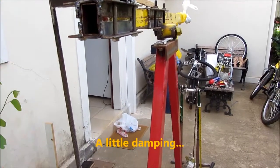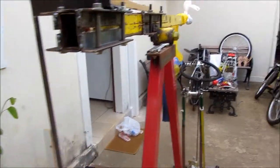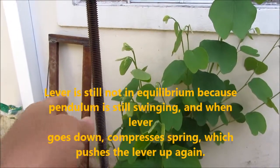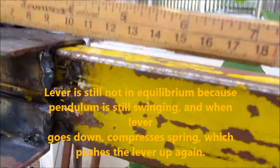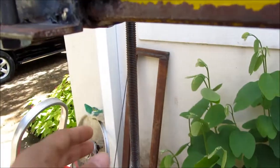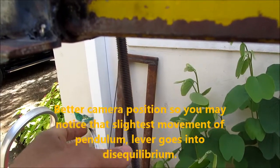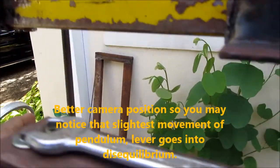You can see that the pendulum is still oscillating, making the lever go down. That makes the whole system go into disequilibrium. With the slightest movement here, I'm going to place the camera in a better position so you can see that any movement - you notice that the lever, the right-hand side, the lever goes down.